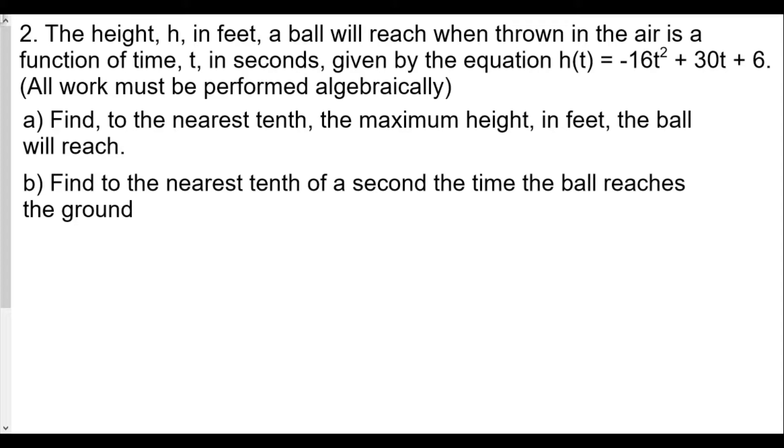If you find this video helpful, please hit the thumbs up button and leave a question or comment in the comments section below. The height h in feet a ball will reach when thrown in the air is a function of time t in seconds, given by the equation h(t) = -16t² + 30t + 6. All work must be performed algebraically.